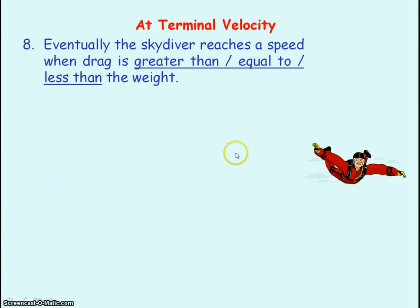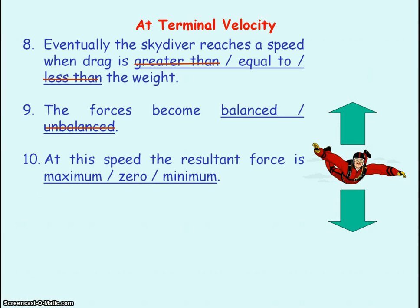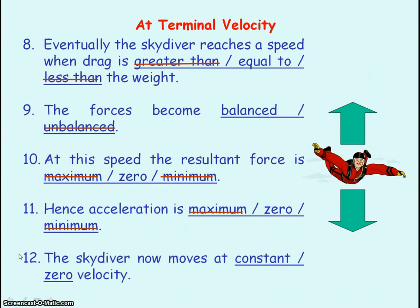Eventually the skydiver will reach a velocity at which drag equals weight. The forces will then be balanced, the resultant force will be zero, and therefore the acceleration will be zero. The skydiver will move at a constant velocity, and we call this terminal velocity — it is the final velocity of the skydiver.